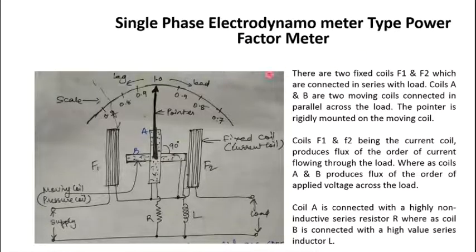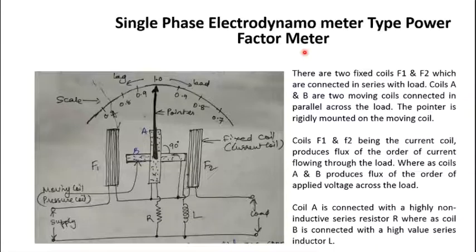Power factor is an important quantity to measure because it tells us the disparity between active power and apparent power. Apparent power is the total power supplied to the system, while active power is the useful power for doing work. Reactive power is wattless power used for establishing magnetic or electrostatic fields, depending on whether an inductor or capacitor is connected. The disparity between apparent and active power should be as minimum as possible, which indicates that the operating power factor should always be unity.